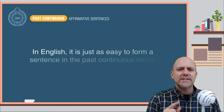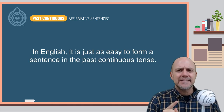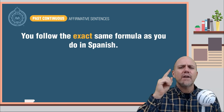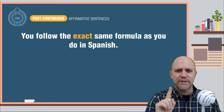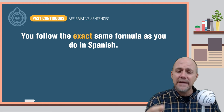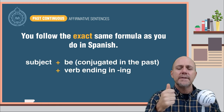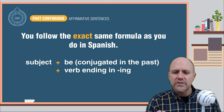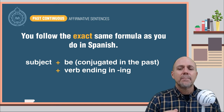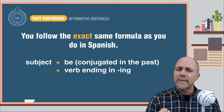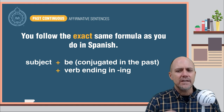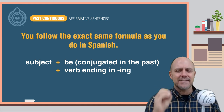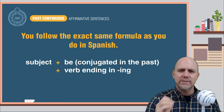In English, it is just as easy to form the past continuous tense. You follow the exact same formula that you do in Spanish: you begin with the subject, plus the verb be conjugated in the past, plus the verb ending in -ing. You use the exact same formula as you do in Spanish.